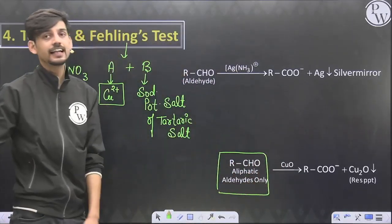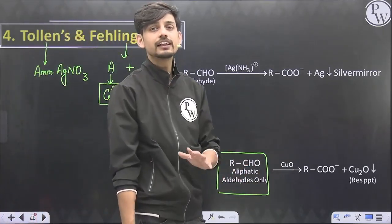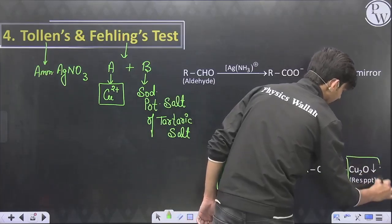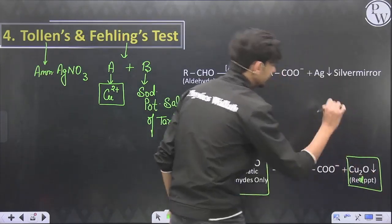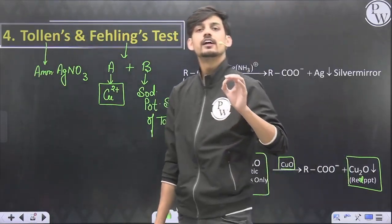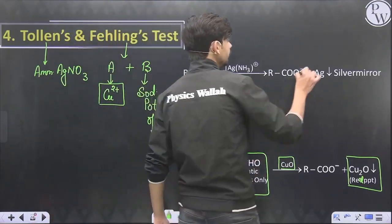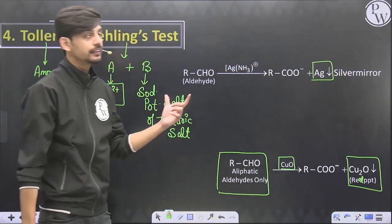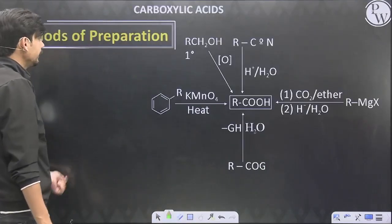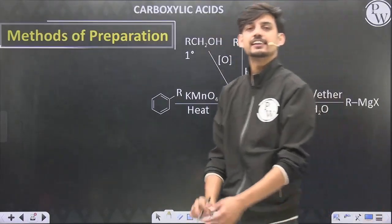Fehling's is a weak oxidizing agent and so is Tollens'. Fehling's can oxidize only aliphatic aldehydes and cannot oxidize aromatic aldehydes or ketones. In the Fehling's test, Cu²⁺ is reduced and as a result we get a red precipitate of Cu2O. Any compound giving a red precipitate of Cu2O with Fehling's solution confirms the presence of an aliphatic aldehyde group. For Tollens' test, if we get a silver mirror, it confirms the presence of an aliphatic or aromatic aldehyde group.